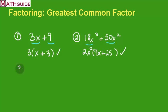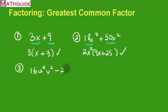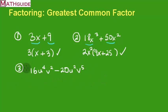That takes us to our third problem, which is even more complicated. It's 16u to the fourth v squared minus 20u squared v to the fifth. So much more complicated, but I have only two terms. Sometimes I've seen problems with three terms, but the process still works the same.